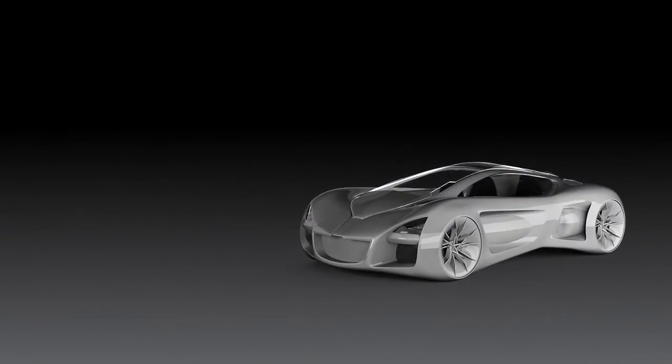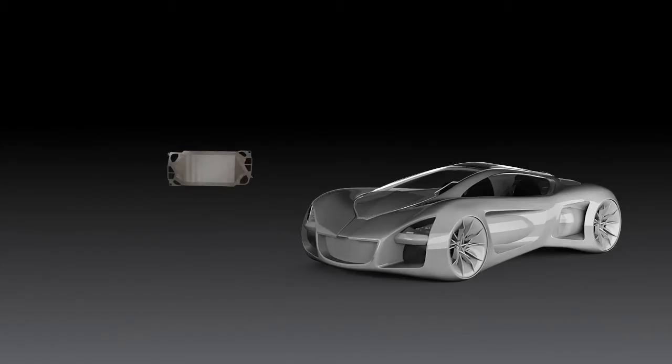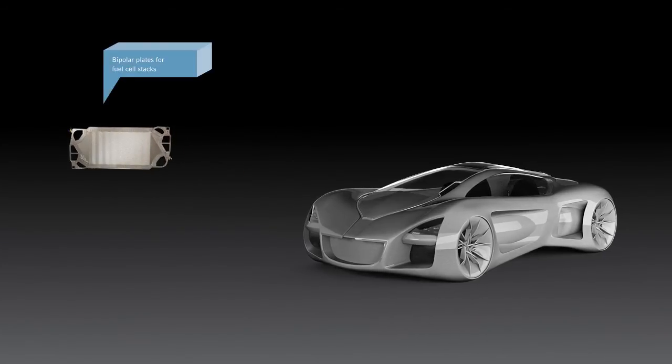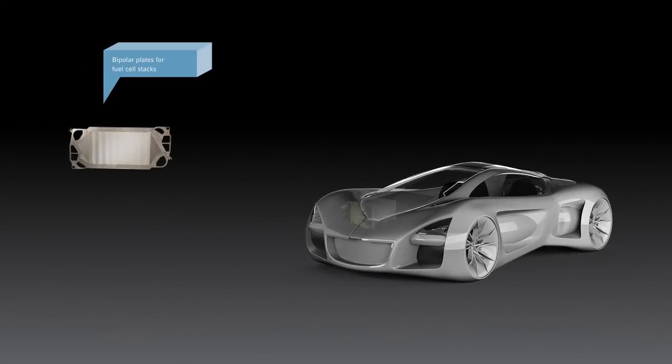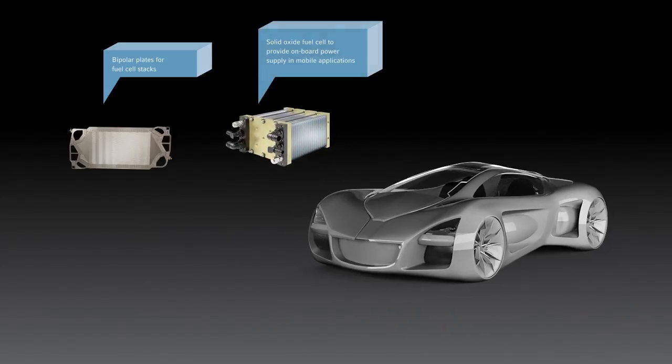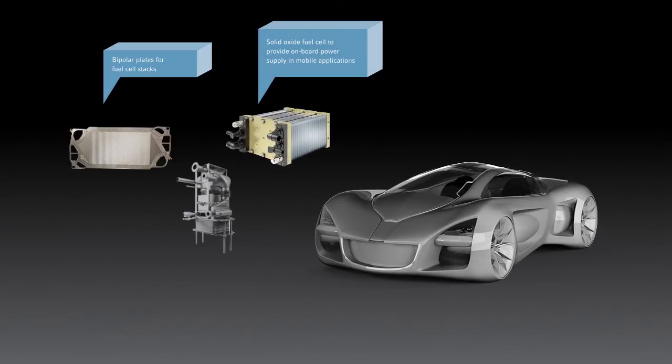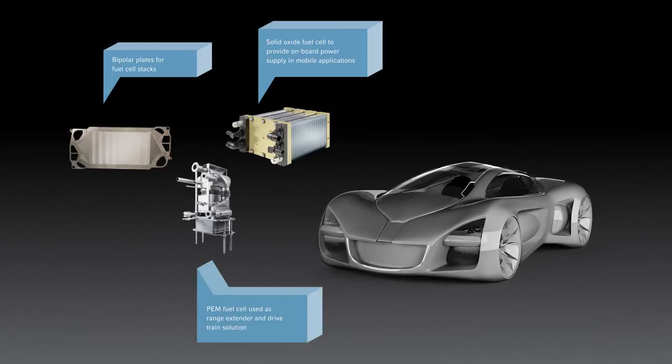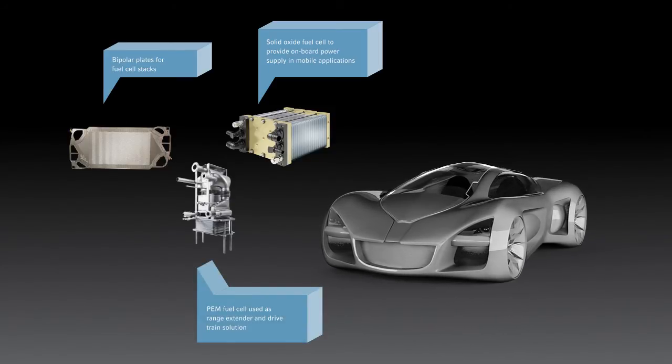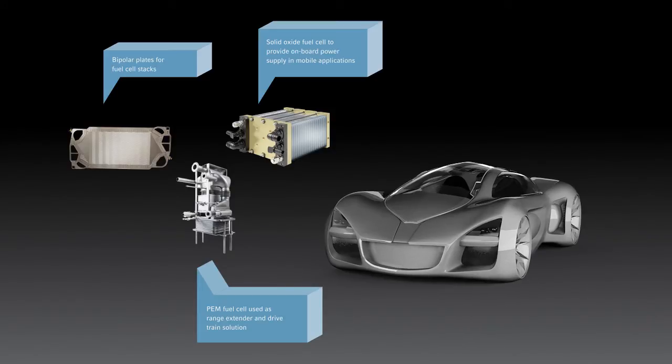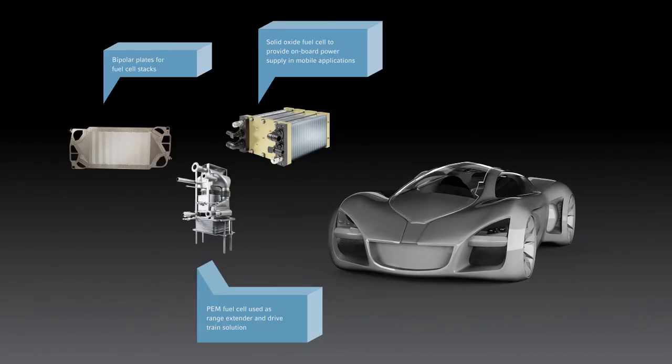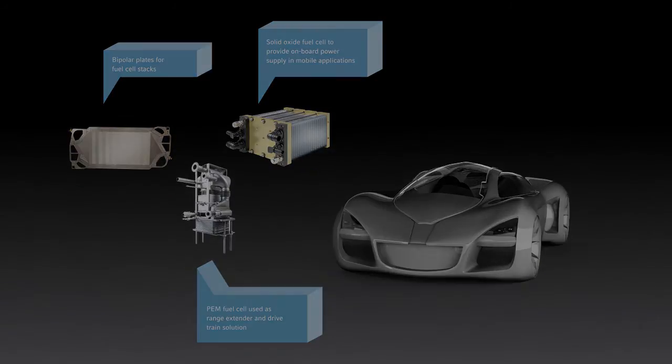Elring Klinger holds a number of important patents in the area of fuel cell technology. Bipolar plates, separator frames and complete fuel cell units are developed and manufactured for both mobile and stationary use. Lightweight stacks serve as onboard power supplies and stationary air conditioning systems in commercial vehicles and as local sources of electricity and heat in residential buildings.